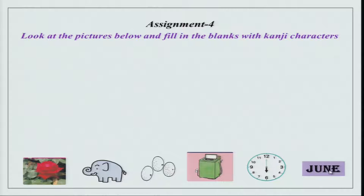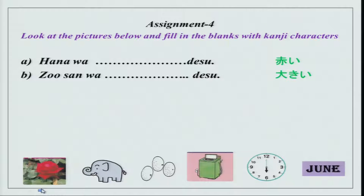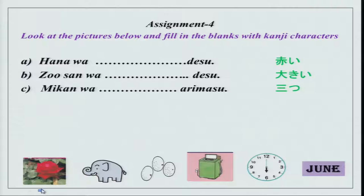Let us see what the assignment is. Hana wa akai desu — or you can name the hana as well and say bara wa akai desu. Then we have zoosan wa ooki desu. Now you would wonder why we are using san over here — san is just for being sweet to zoosan, because zoosan is so big, for the hugeness of zoosan, we use san. Zoosan wa ooki desu. Then we have mikan wa mitsu arimasu — one, two, three — mitsu arimasu.